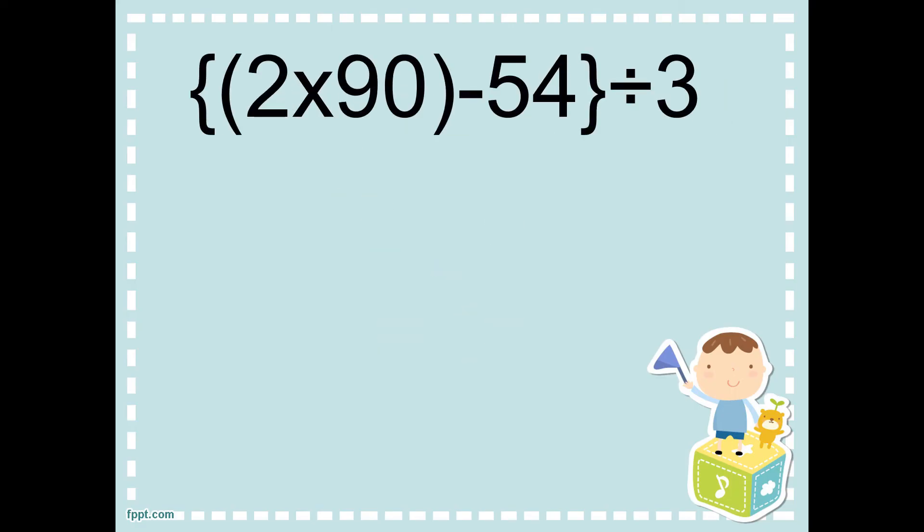Next example. Bracket, open parenthesis, two times ninety, close parenthesis, minus fifty-four, close bracket, divided by three. So, we will use the PEMDAS rule since we have a bracket sign and a parenthesis sign.